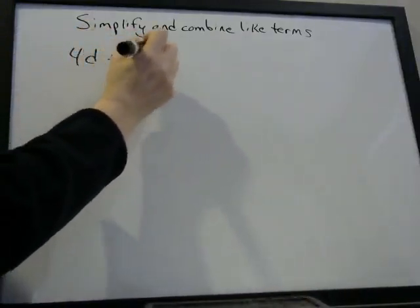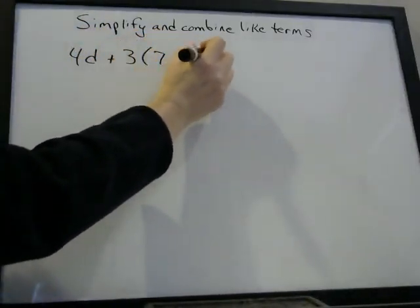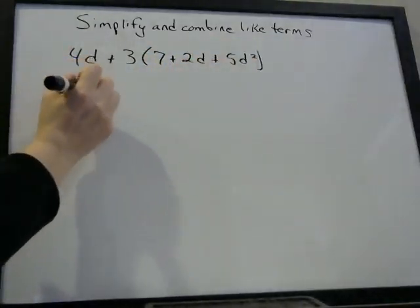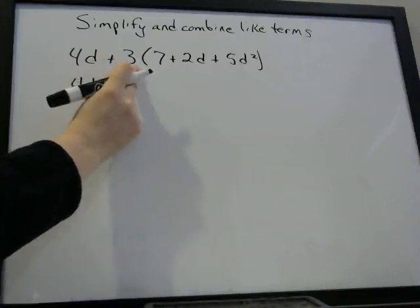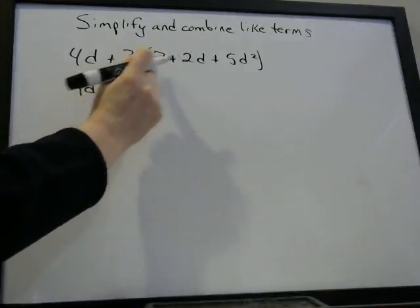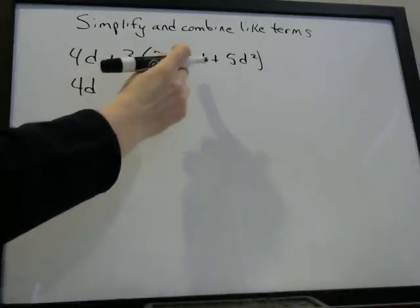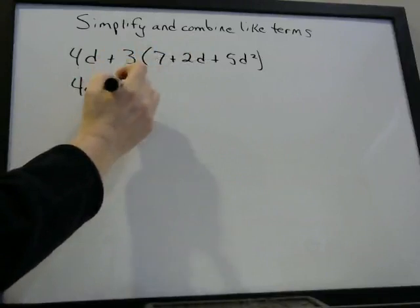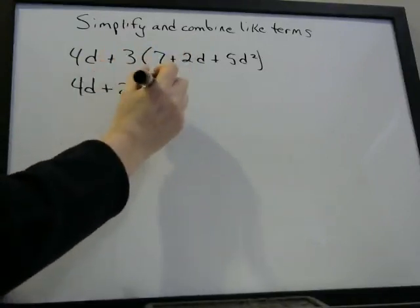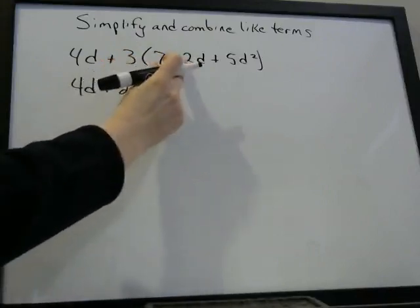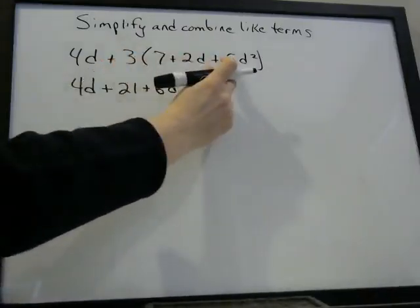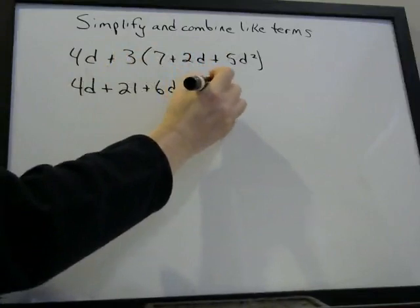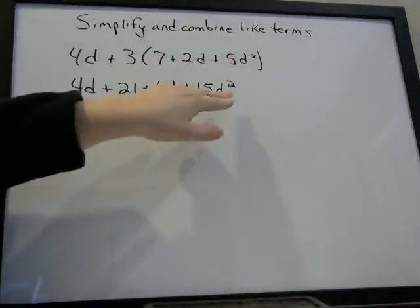We're going to do two more problems that are a little bit more complicated. 4D plus 3 times (7 plus 2D plus 5D squared). So we start with 4D, and we're going to use the distributive property. Remember, we can do multiplication on things even though they don't have a D — we can multiply it — but we cannot add or subtract unless they have like terms. 3 times 7 is 21. 3 times 2D is 6D — we take 3 times 2 is 6 and keep the D. 3 times 5D squared: 3 times 5 is 15, and we just keep the D squared.